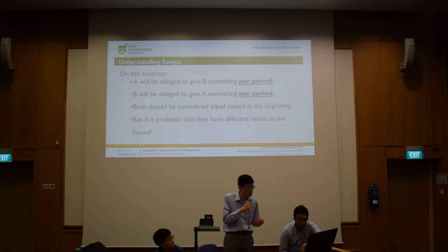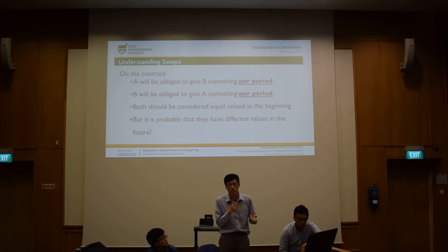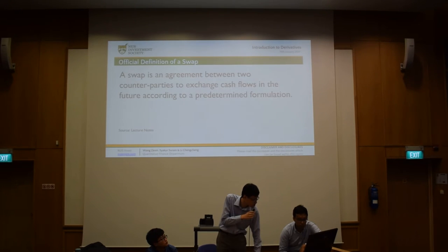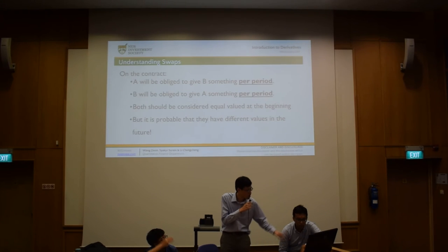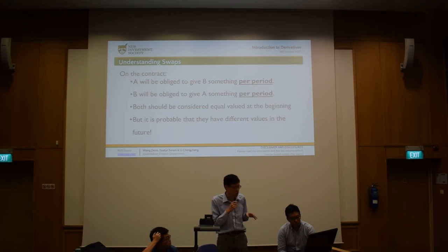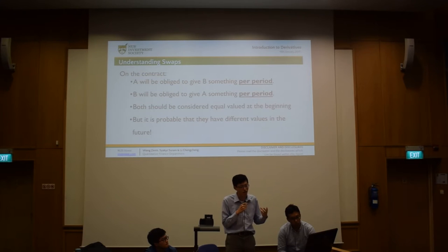In a general swap contract, Party A is obliged to give Party B something, and Party B is obliged to give something back to Party A. A key principle is that both items exchanged between A and B should be considered to have equal value at the beginning — meaning at the point of signing the contract, we expect them to have the same value in the future, though over time they will likely diverge.